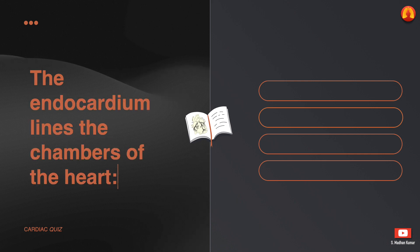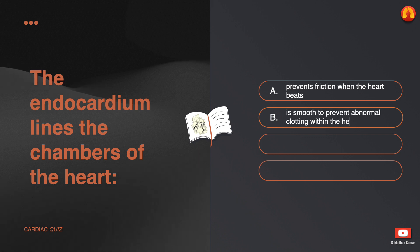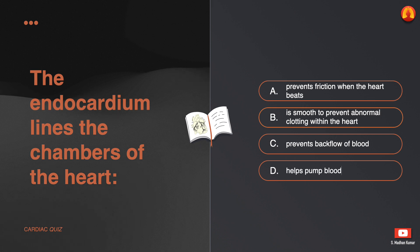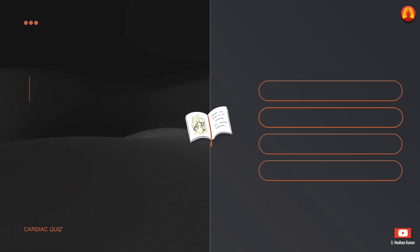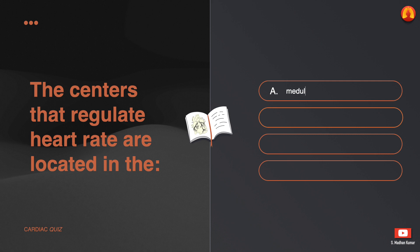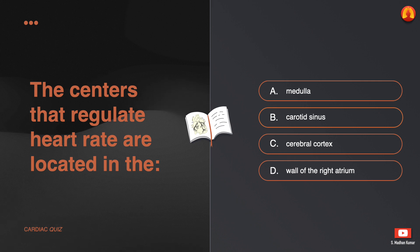The endocardium lines the chambers of the heart and: A. Prevents friction when the heart beats. B. Is smooth to prevent abnormal clotting within the heart. C. Prevents backflow of blood. D. Helps pump blood. The correct answer is: it is smooth to prevent abnormal clotting within the heart.